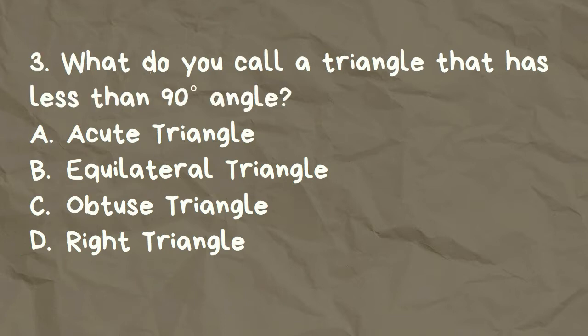What do you call a triangle that has less than 90 degrees angle? A. Acute triangle, B. Equilateral triangle, C. Obtuse triangle, D. Right triangle.